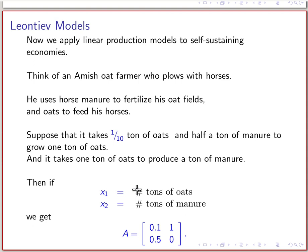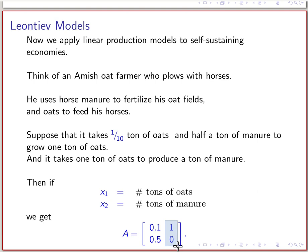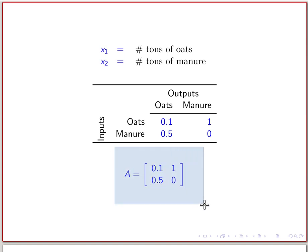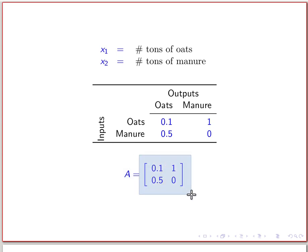We can say that X1 is the number of tons of oats produced and X2 is the number of tons of manure produced. Then we set up a matrix — called the technology matrix in Leontief theory — which is basically a recipe matrix. The first column is the recipe for producing one ton of oats: it requires 0.1 tons of oats as seed and 0.5 tons of manure as fertilizer. The second column is the recipe for one ton of manure: it requires one ton of oats and zero manure.